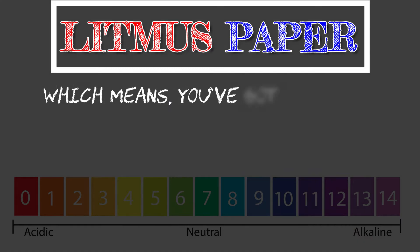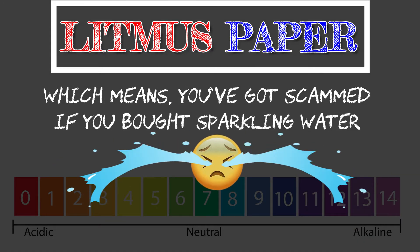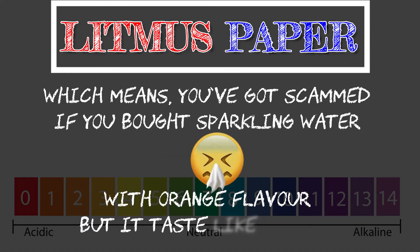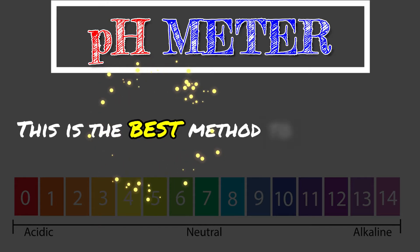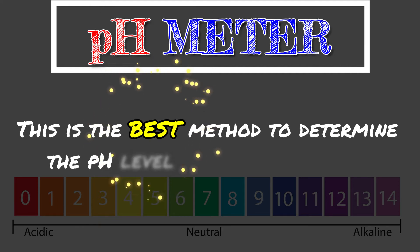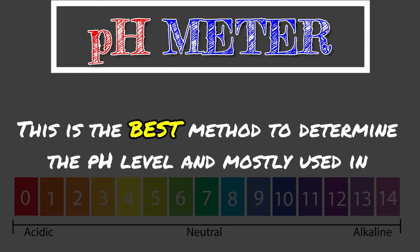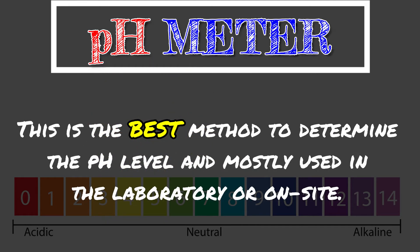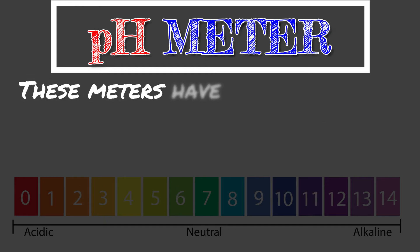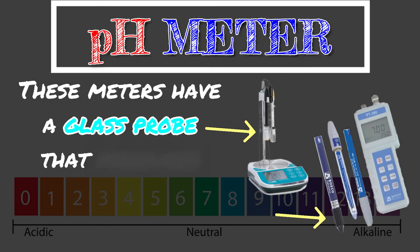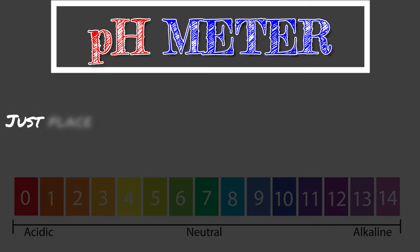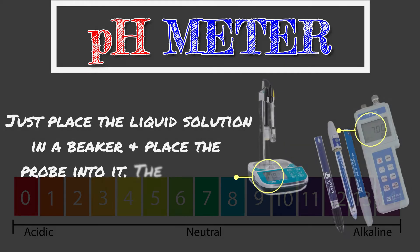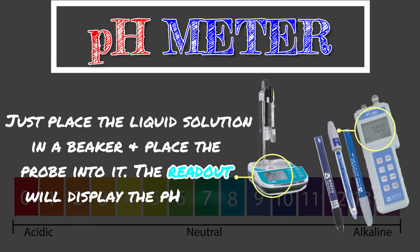Which means you can tell — for instance, if you bought sparkling water with orange flavor but it tastes like water, it's neutral. pH meter: this is the best method to determine the pH level, mostly used in the laboratory or on-site. These meters have a glass probe that measures a solution's ion concentration — just place the liquid solution in a beaker and place the probe into it, and the readout will display the pH level.